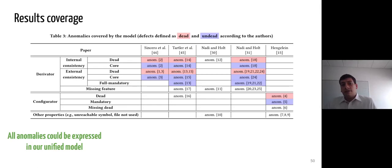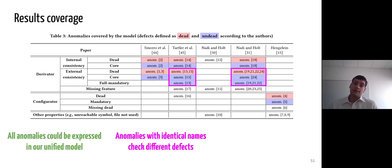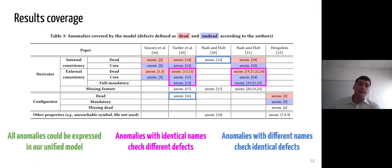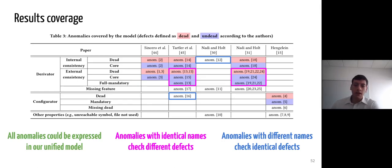All the anomalies from the state-of-the-art could be expressed in our model, and this allowed us to observe two facts. First, some anomalies have identical names but check different defects — these include the two undead anomalies detailed earlier. On the opposite, some anomalies have different names but check identical defects. In this case, two definitions characterize dead assets, but they are not defined as such by the authors.